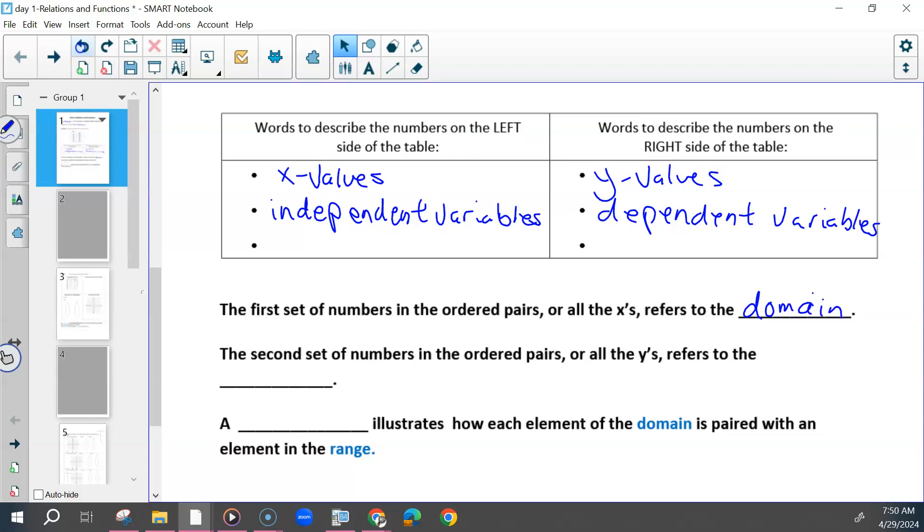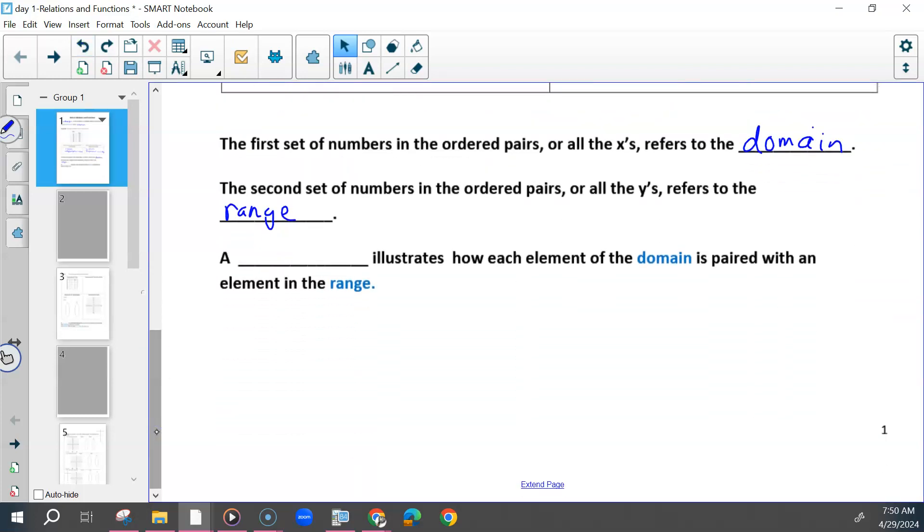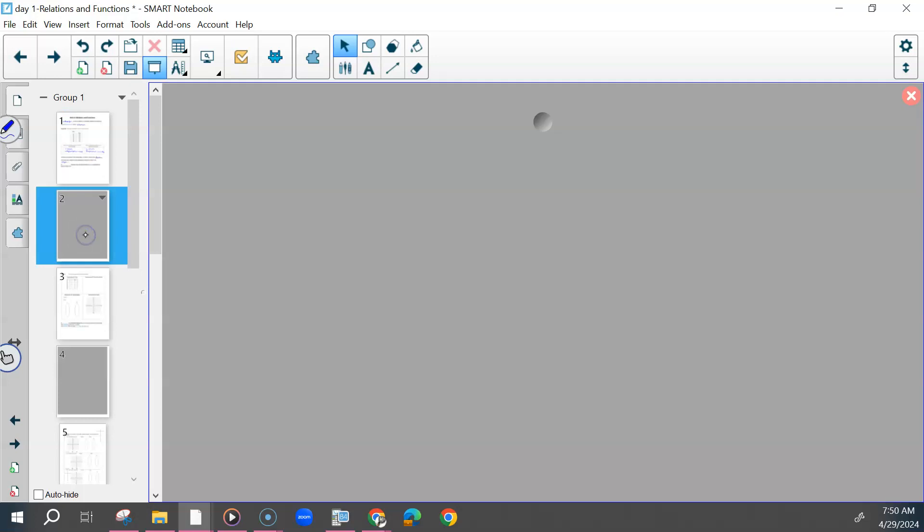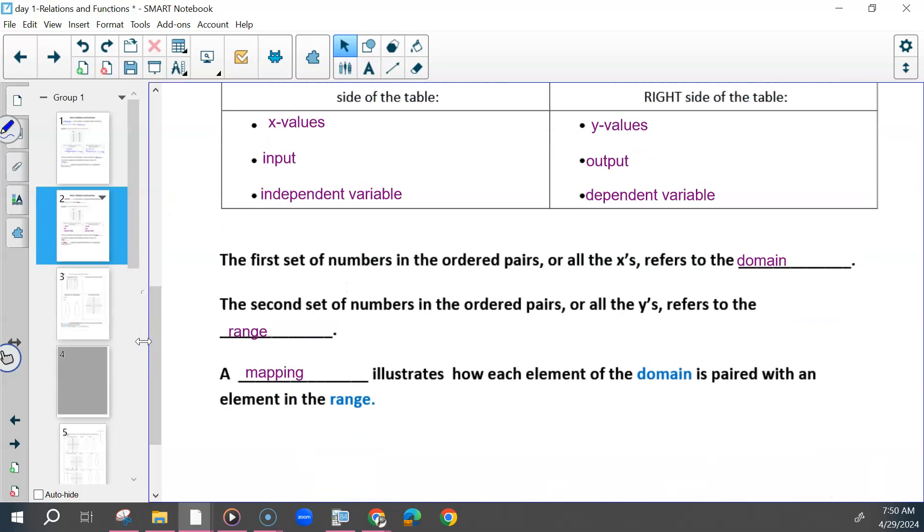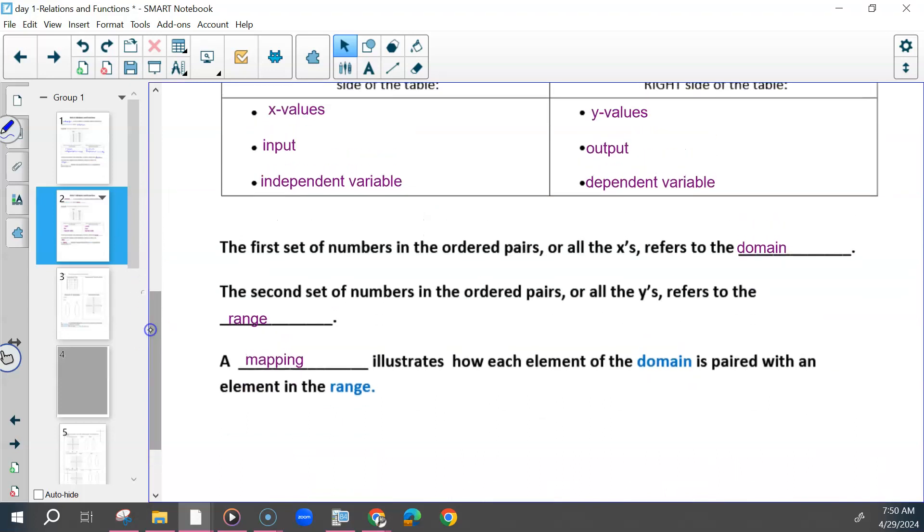The second set of numbers in the ordered pairs, or all of the Y's, refers to the range. X values are also the input, Y values are also the output, and then a mapping illustrates how each element of the domain is paired with each element in the range.